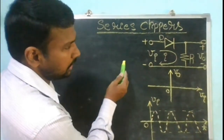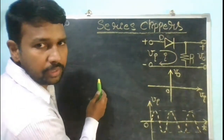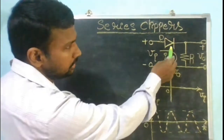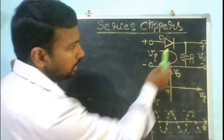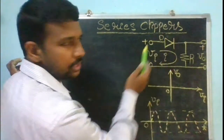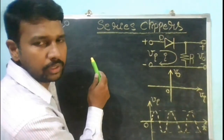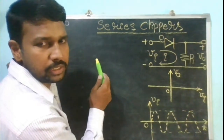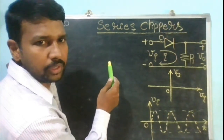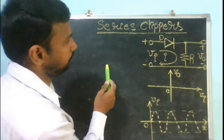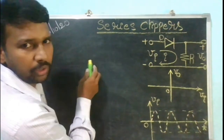Before we start, the assumption is that the diode is an ideal diode. In an ideal diode, if the diode is forward biased it can be replaced with a short circuit; if it is reverse biased then it can be replaced with an open circuit.